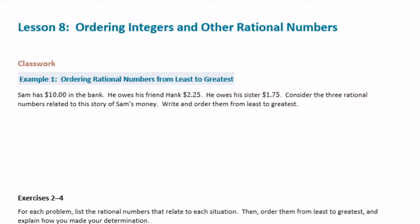Sam has $10 in the bank. He owes his friend Hank $2.25. He owes his sister $1.75. Consider the three rational numbers related to this story of Sam's money. Write and order them from least to greatest. So first let's just write out the numbers that we have. We have $10 — I'll write that as 10.00.